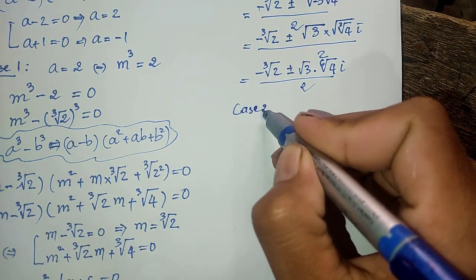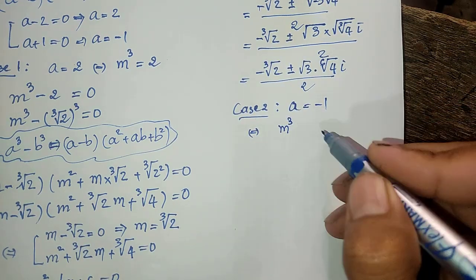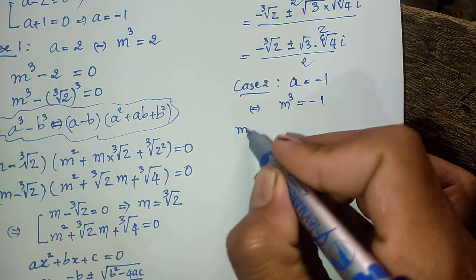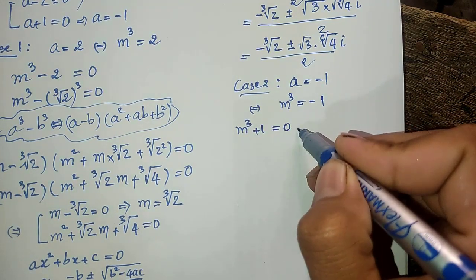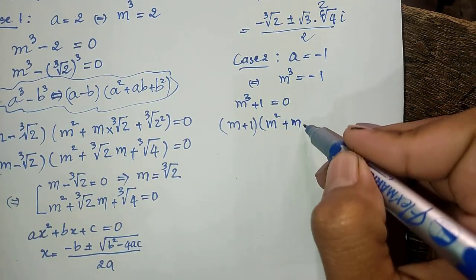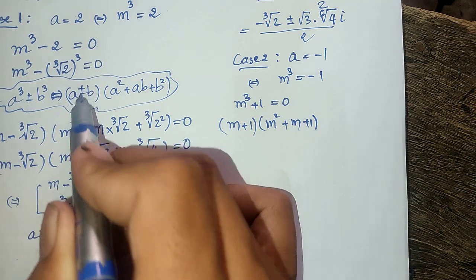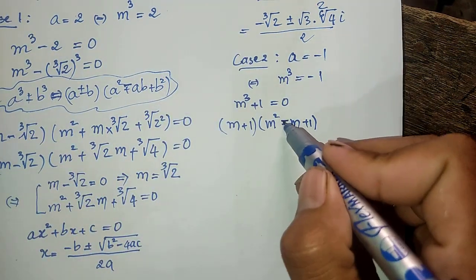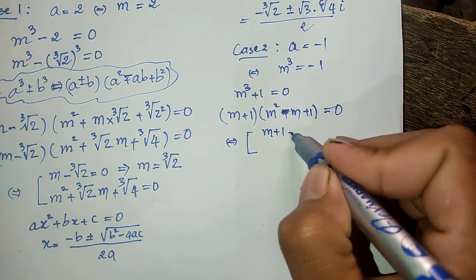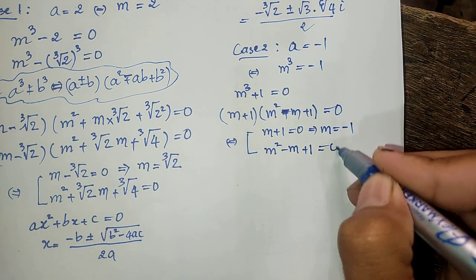For the second case, a equals minus 1, so m power 3 equals minus 1. Moving to the left hand side: m power 3 plus 1 equals 0. Using the sum of cubes rule, we factor this as (m plus 1) times (m squared minus m plus 1) equals 0. So we get two factors equal to zero: m plus 1 equals 0, giving m equals minus 1.